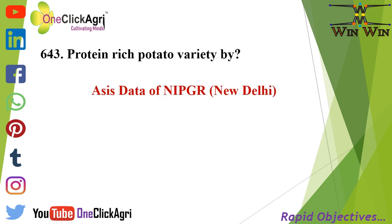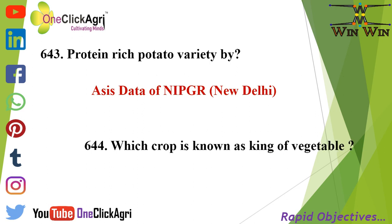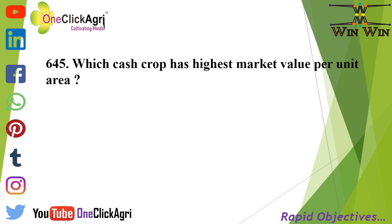The protein-rich potato variety was developed by Asish Datta of NIPGR from New Delhi. Potato is known as the king of vegetables. Potato is also the cash crop with the highest market value per unit area.